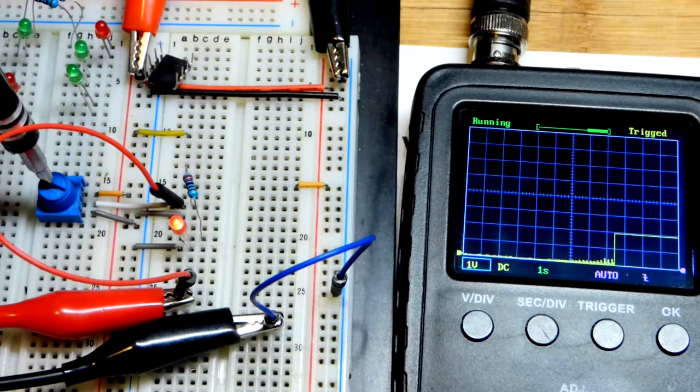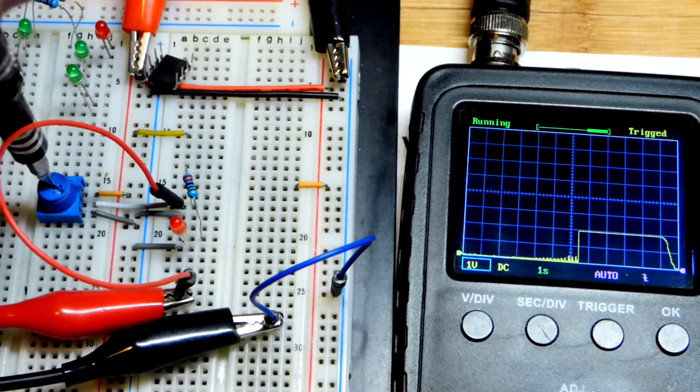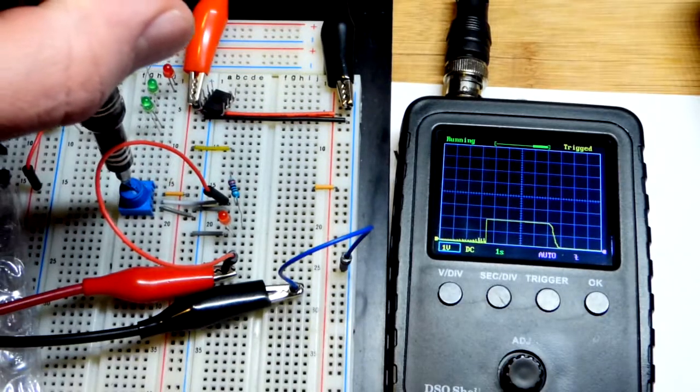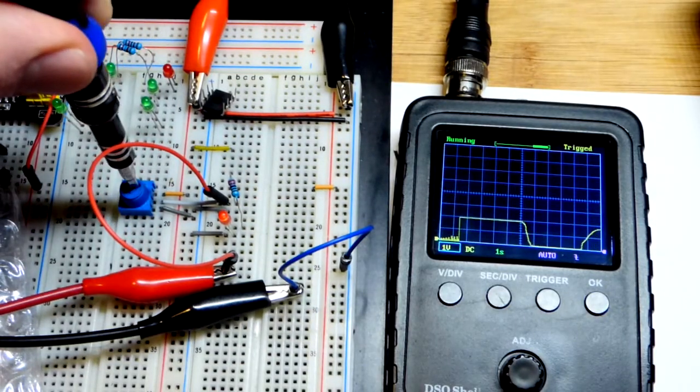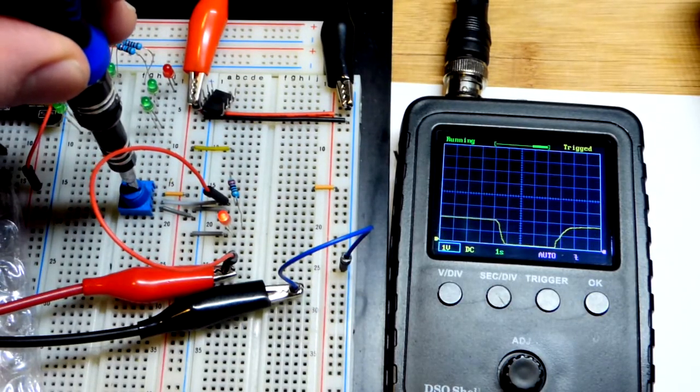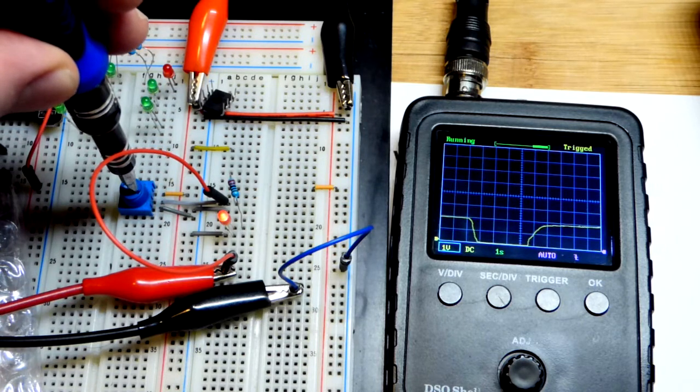And we saw before it was a nice smooth transition. Of course we can get to zero volts, plenty fine. Now I'm going to turn it up and you can see once the LED starts conducting, it holds the voltage down.